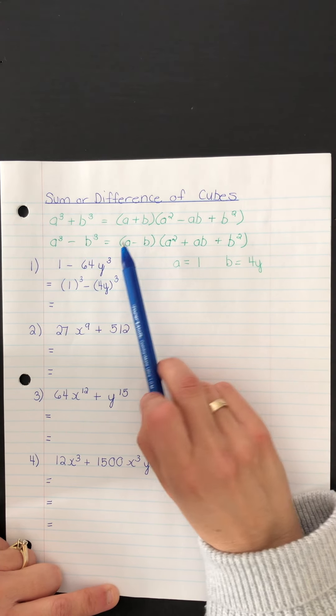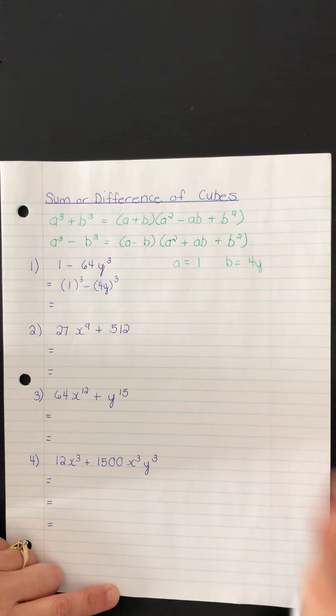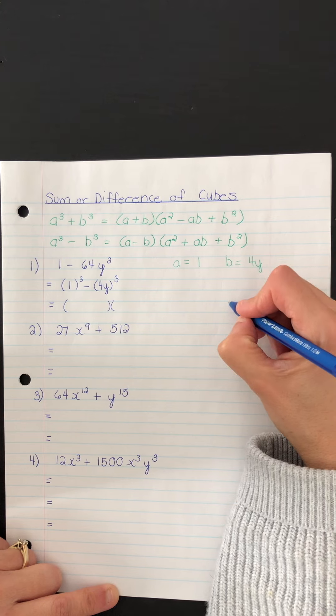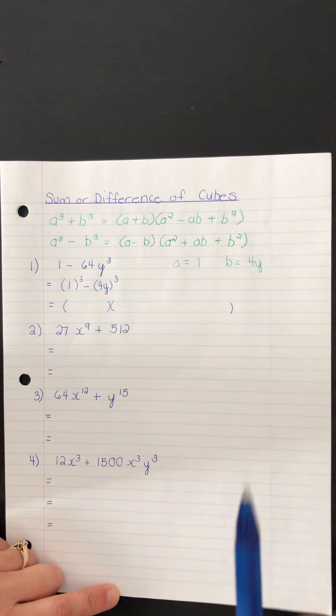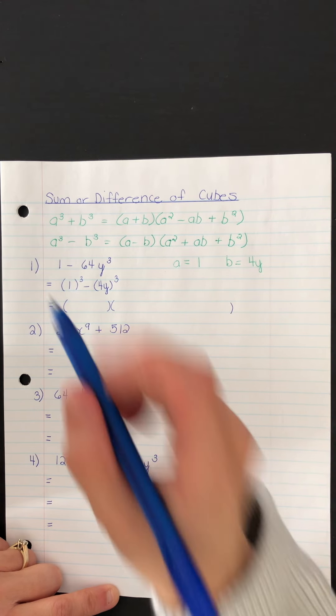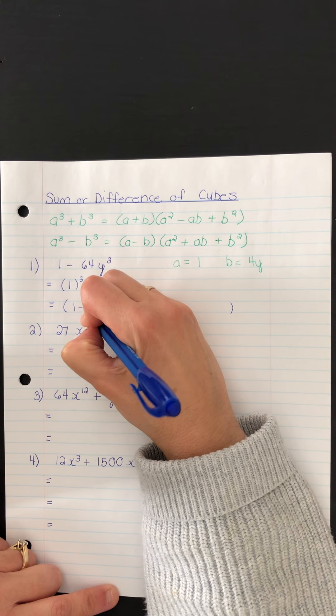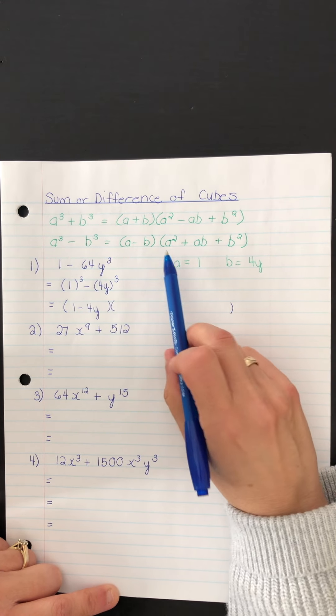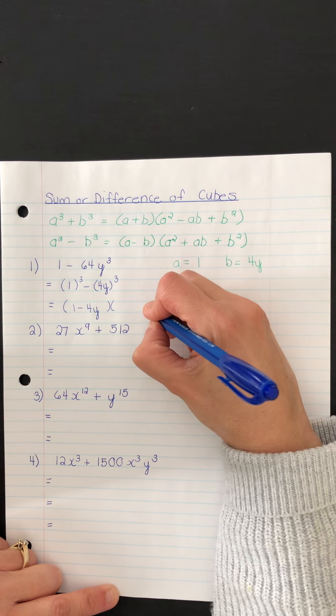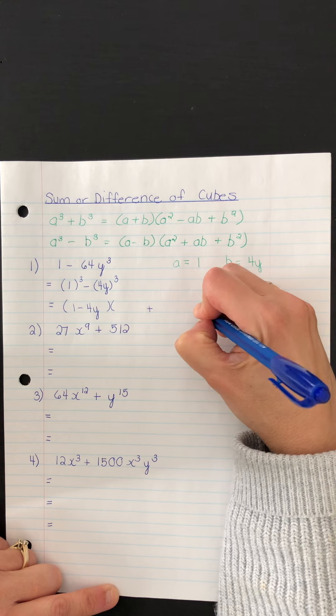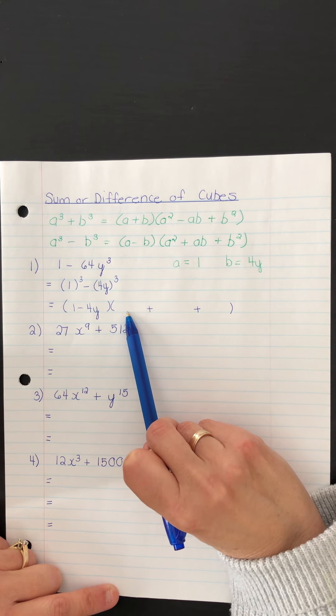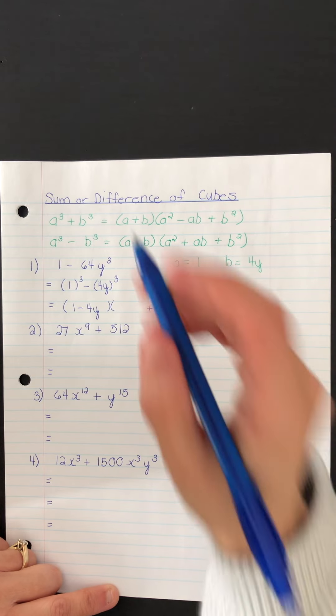And we simply substitute into this right-hand side. So we'll have a binomial and then a trinomial. The binomial is a minus b, so that means it's 1 minus 4y. And then we're going to set up this trinomial. Notice that both of the signs here are positive. So we should have in this position a squared, so that means 1 squared.